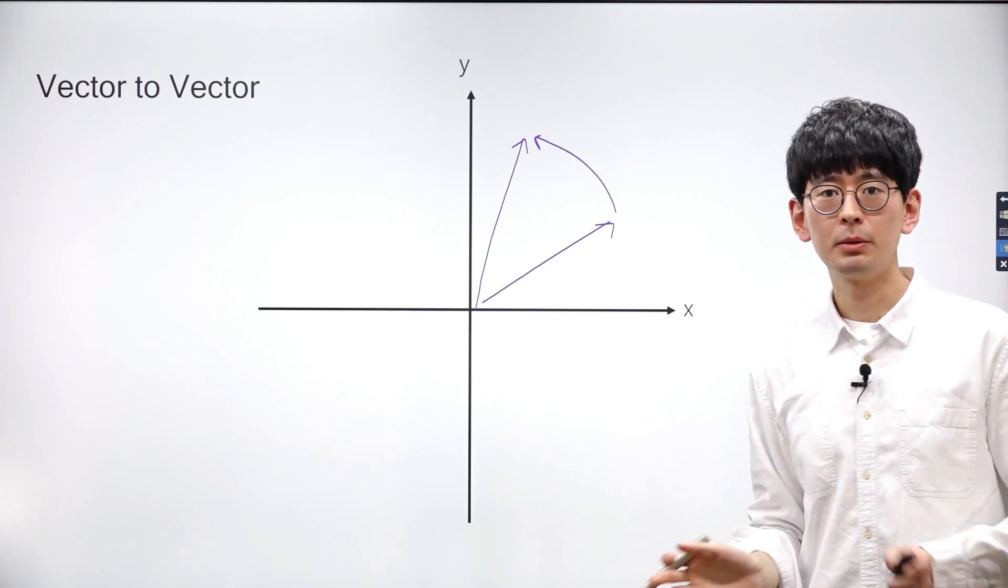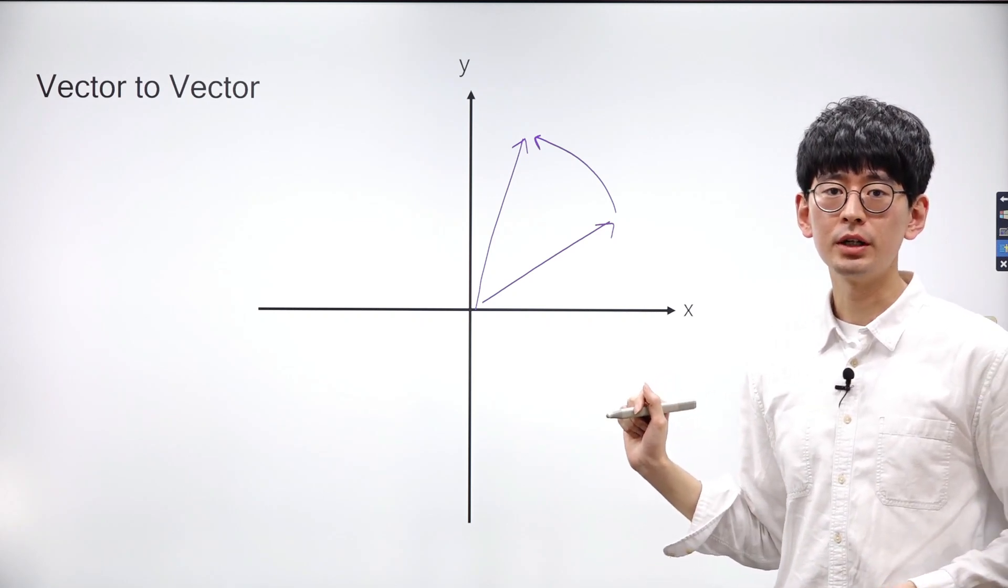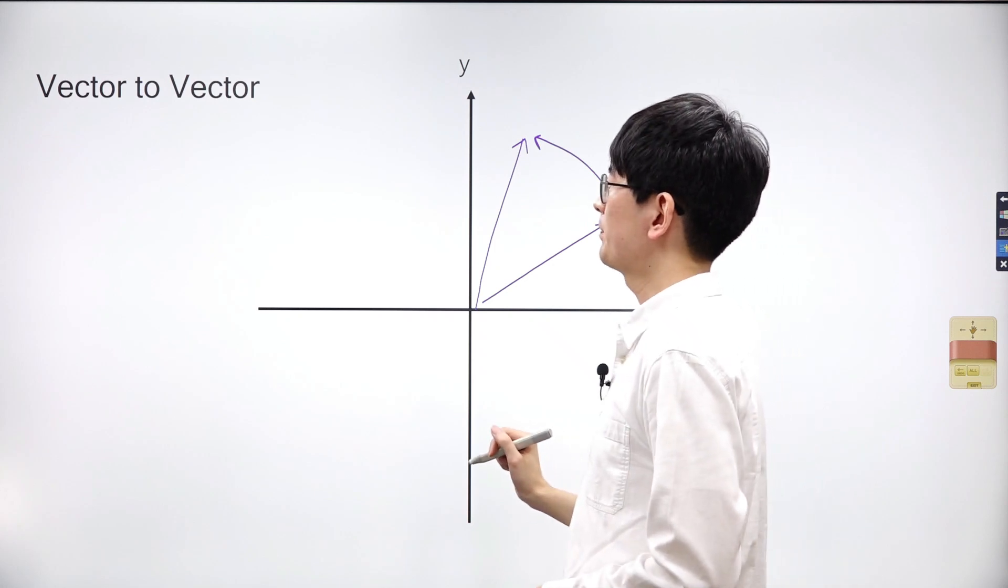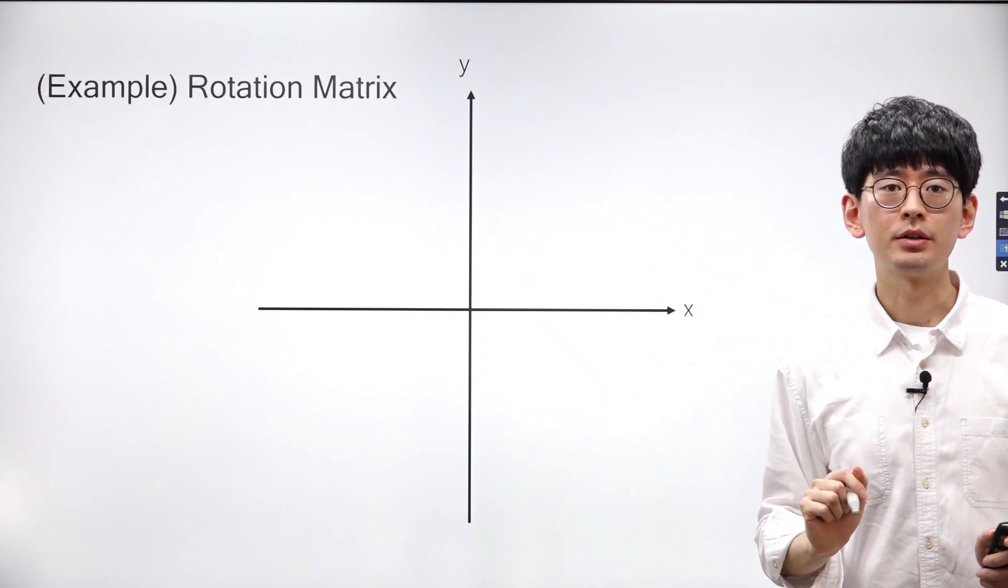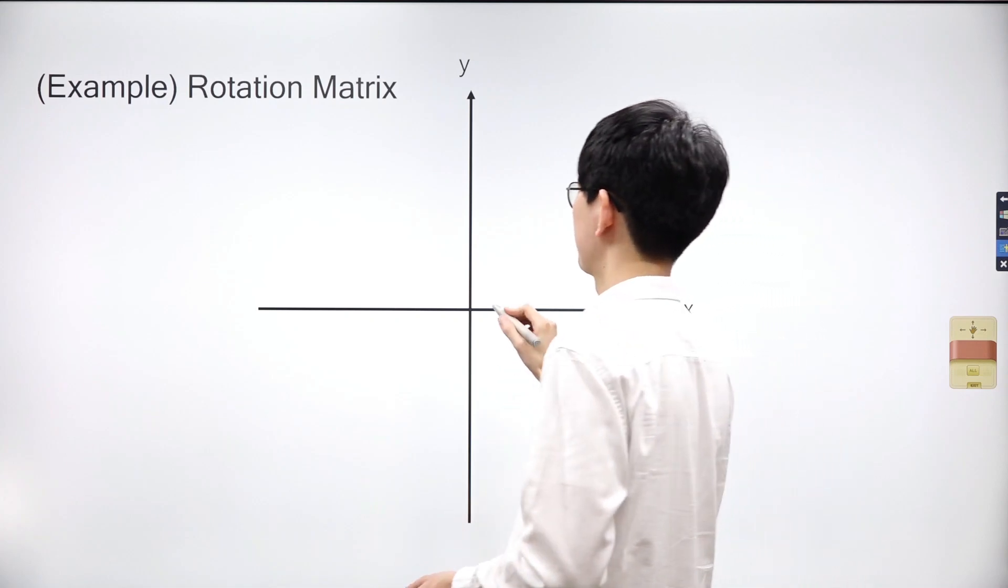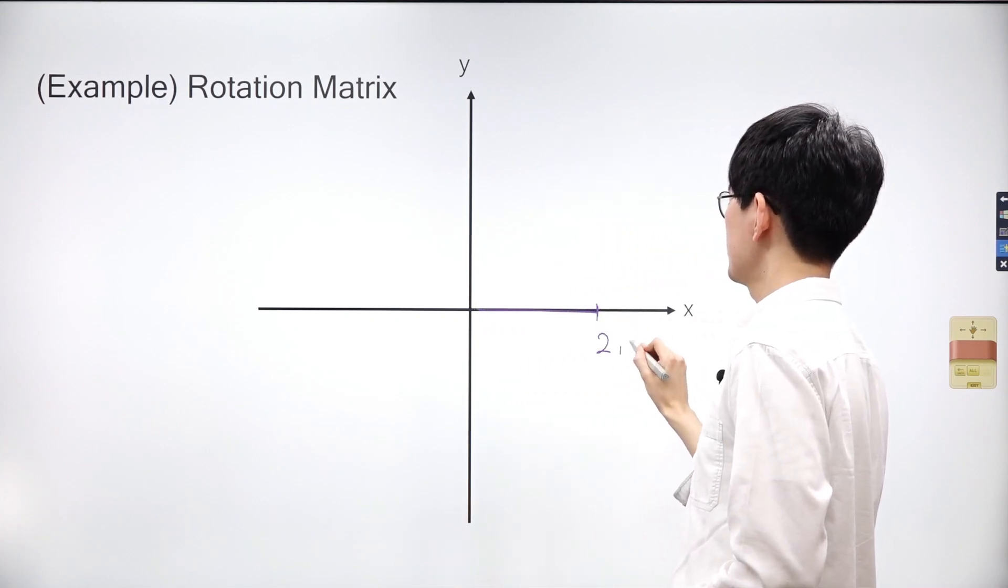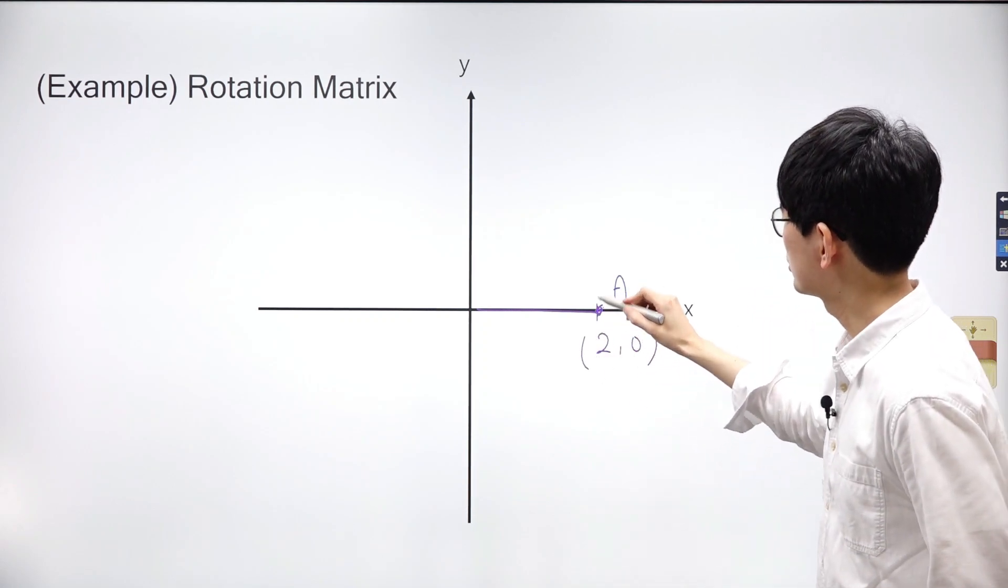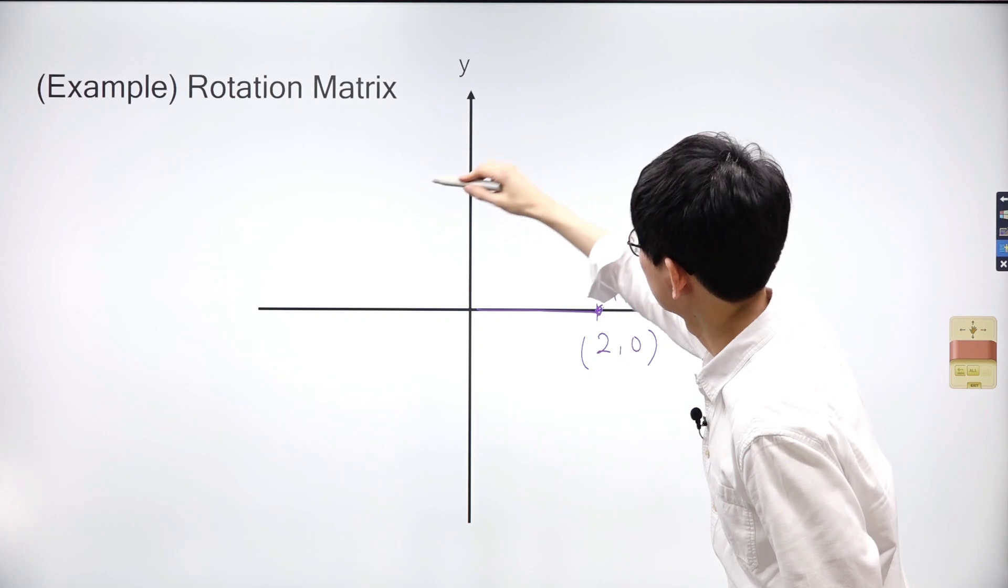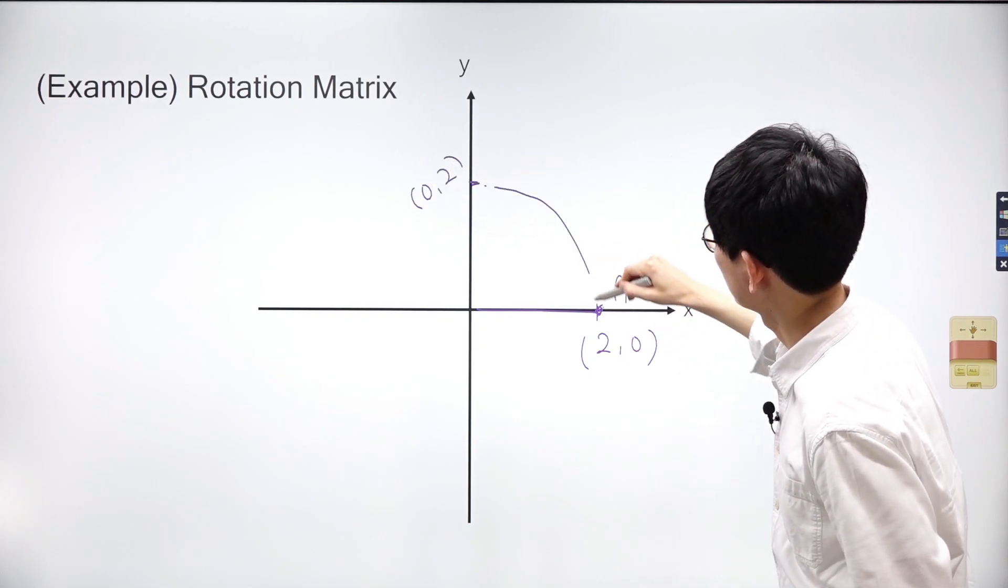With this interpretation of matrix-vector multiplication, we can now understand matrices from various perspectives. For example, let's take a rotation matrix. Suppose we have vector A positioned at coordinates (2,0). If we rotate vector A 90 degrees counterclockwise, we obtain a new vector at coordinates (0,2), which we'll denote as vector B.